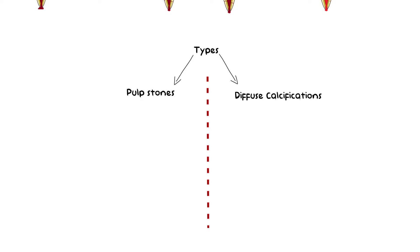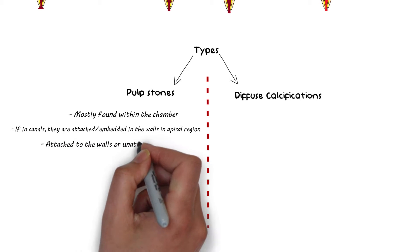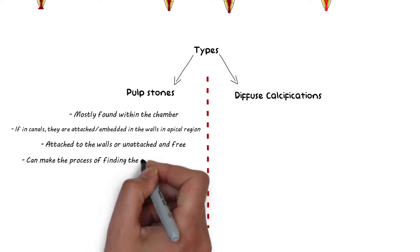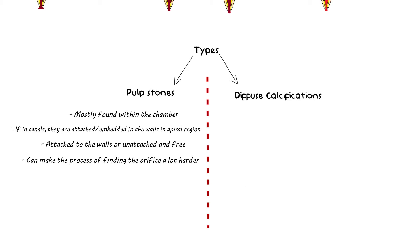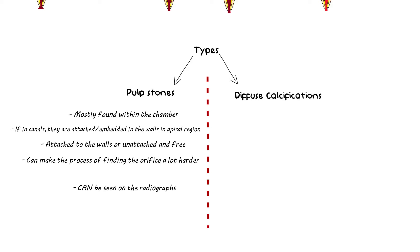Pulpal stones are like small stones usually found in the chamber of the pulp. Although they are not common in the canals, if present they are usually attached or embedded in the canal wall in the apical region. They can either be attached or embedded in the dentinal walls, or they can be unattached. Although pulpal stones don't block the orifice of the canals, they do make the process of finding an orifice a lot harder, and if they are too large, pulpal stones usually get removed during access preparations. One important thing to remember is that pulpal stones can be seen on radiographs, which helps for confirming their presence.